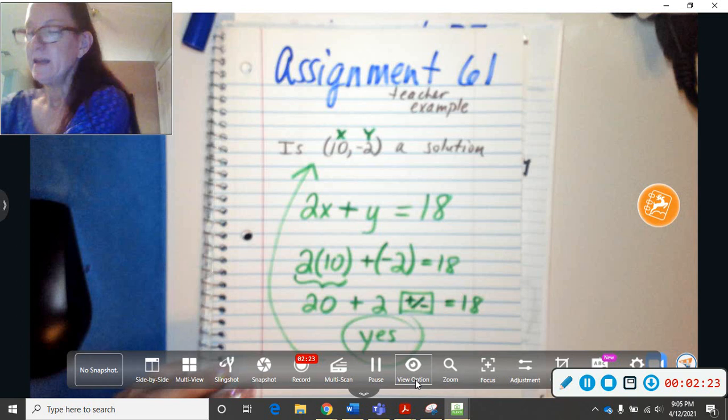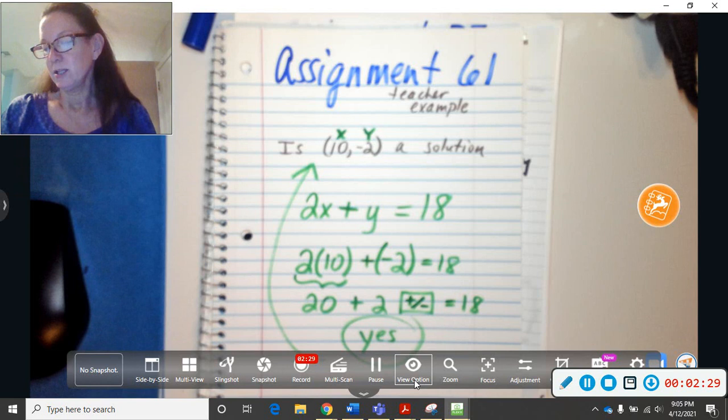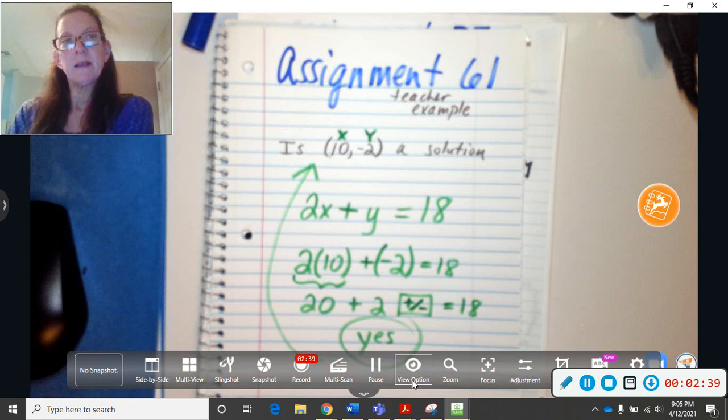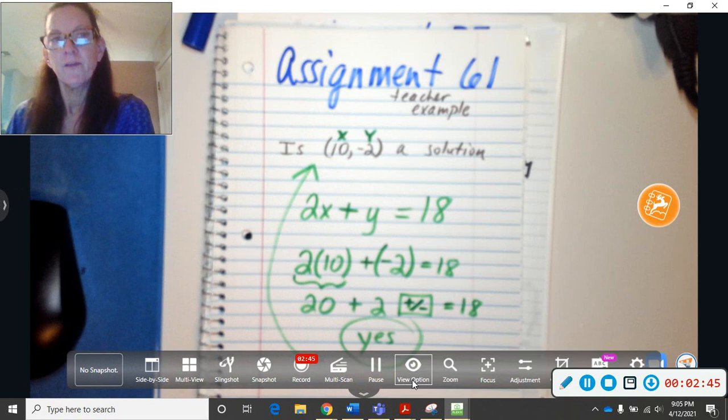This is a solution to this equation. Now on your problem you're getting ready to do, it's going to say, is this a solution to this system of equations? So you need to try the two numbers in both equations. And if it's true, the answer is yes. So you're doing it just like we did, but you're going to do it separately in both equations to see if it works.